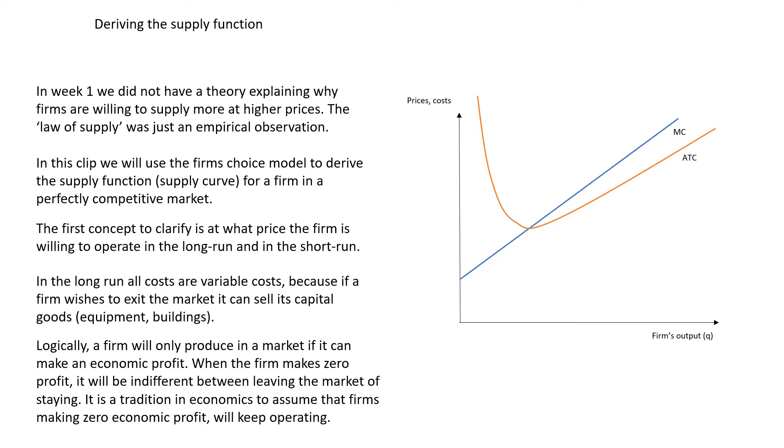The ATC and the MC curves are going to intersect at the minimum of the ATC. We know that if the market price of the good is less than the minimum of the ATC, which is denoted here by Pmin, then the firm will not be willing to stay in the market because it makes a loss. If the price in the market equals the minimum of the ATC, then the firm is going to be willing to operate at its efficient scale, which is denoted here by Qmin.